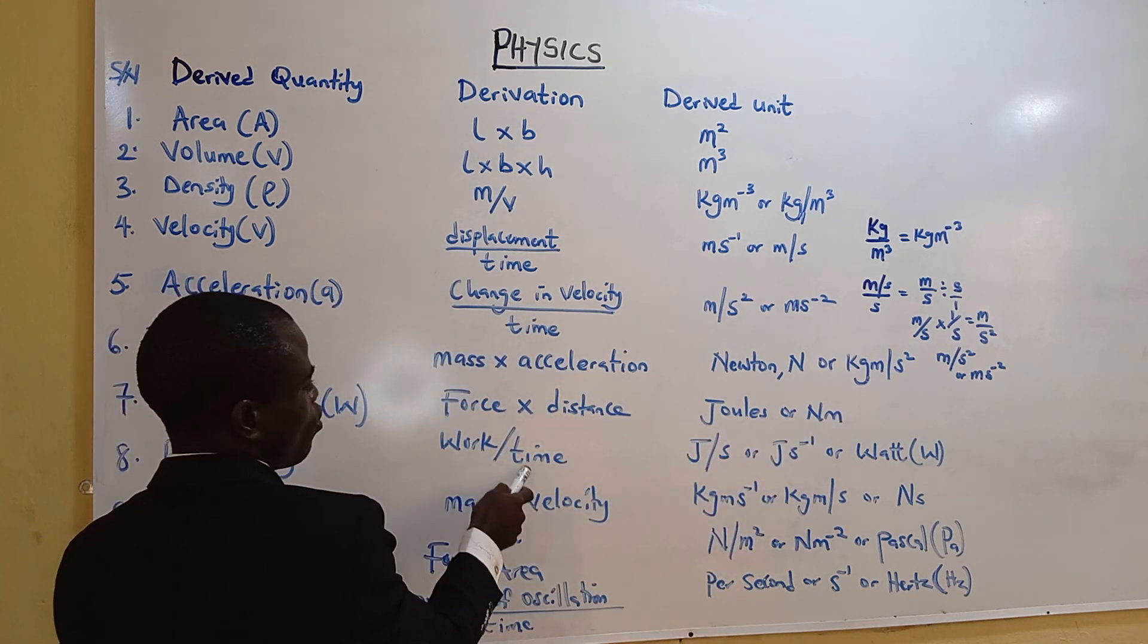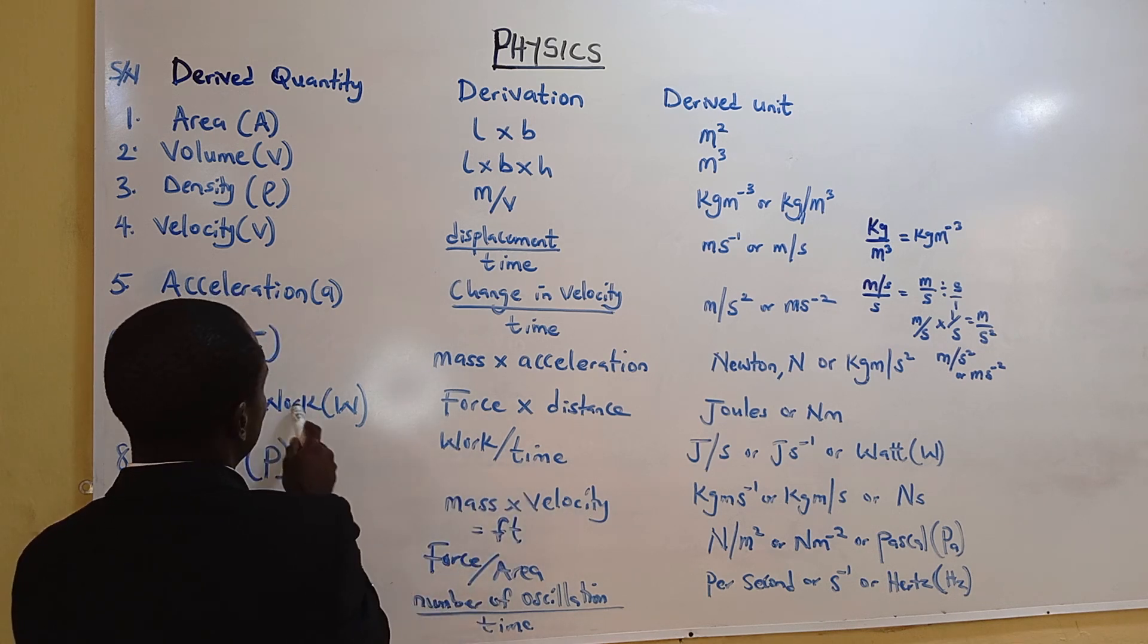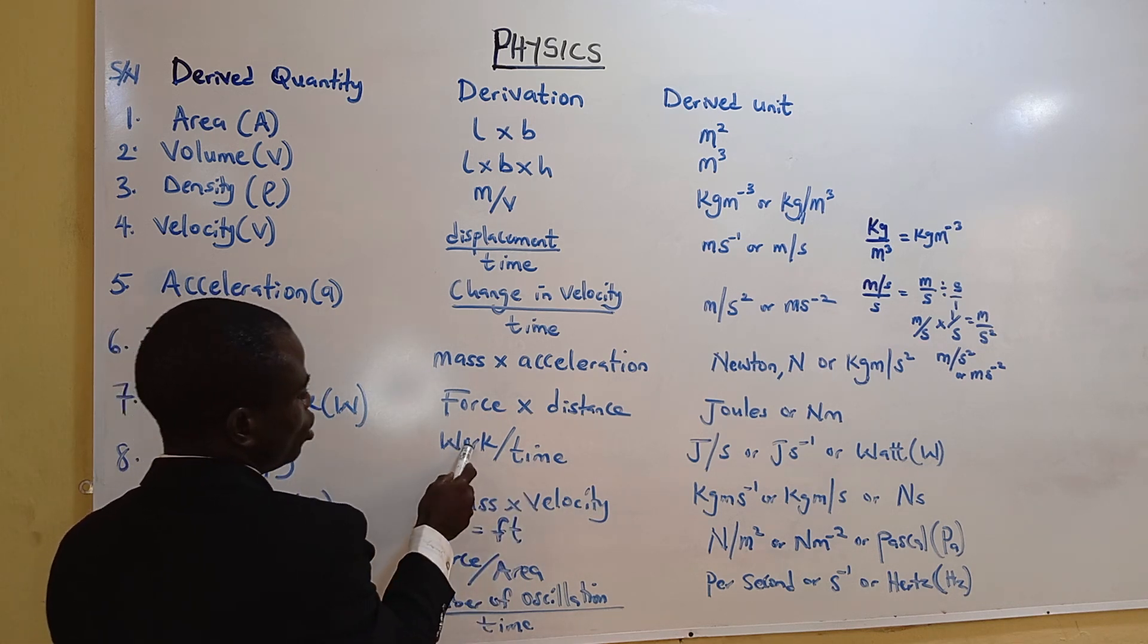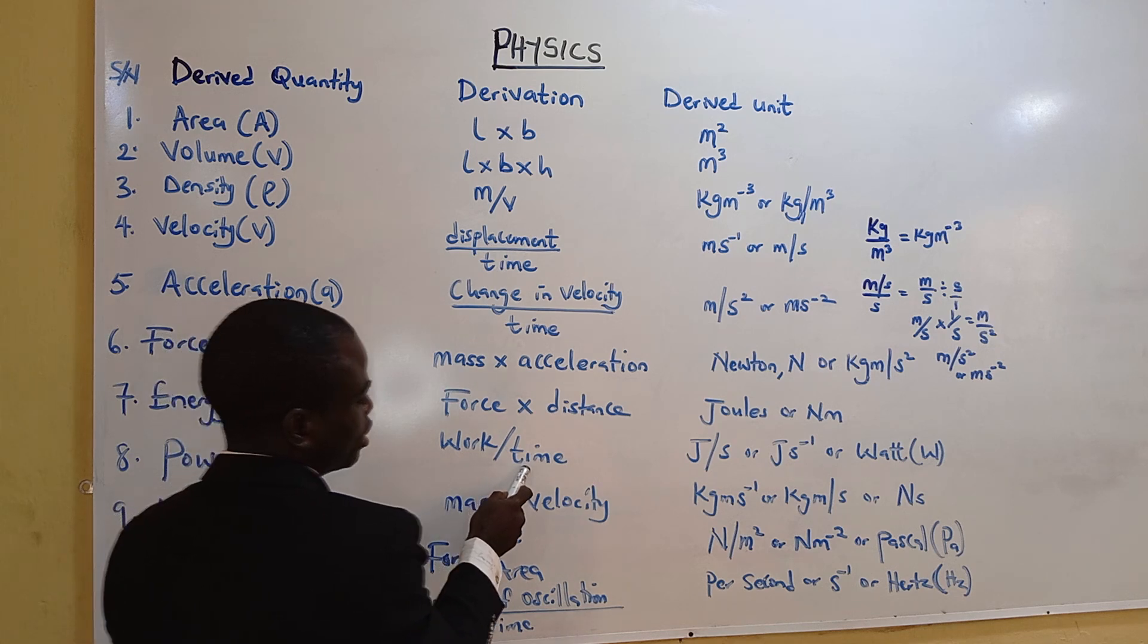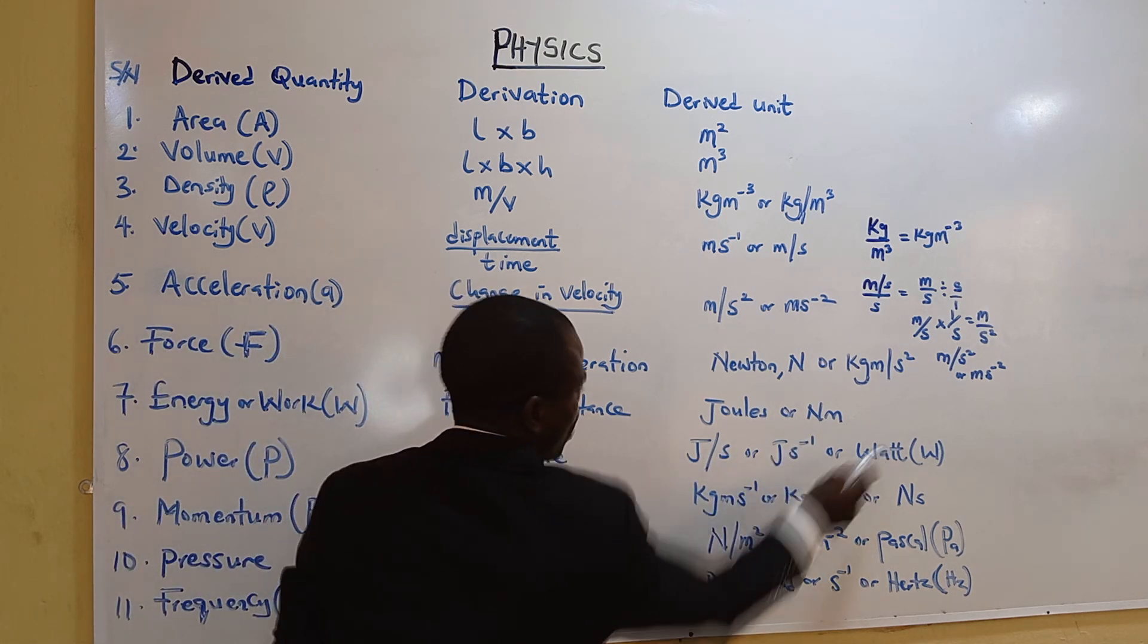Power. It's work over time. Unit of work is joules. Unit of energy and work, they are the same joules. Joules per second. J over S, or J times S to the minus one, or watts.